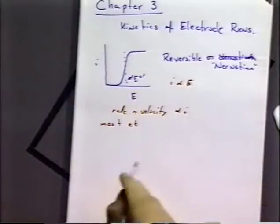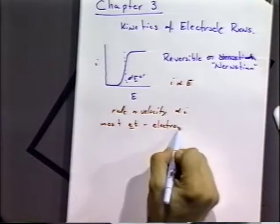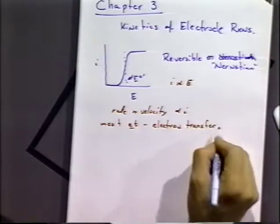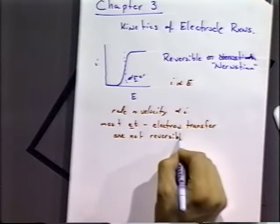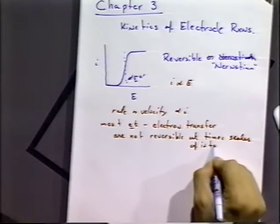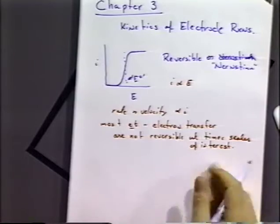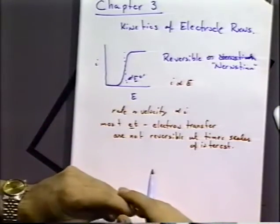Most electron transfer processes — I'll use ET to stand for electron transfer — so most ET processes are not reversible at timescales of interest. Almost every electrode reaction can be made reversible if we allow sufficient time for the reaction to achieve equilibrium, but in general we may not be willing or able to wait. So most situations are not at equilibrium, and we do have to understand kinetic processes on electrodes.